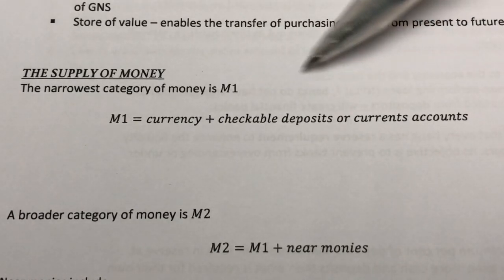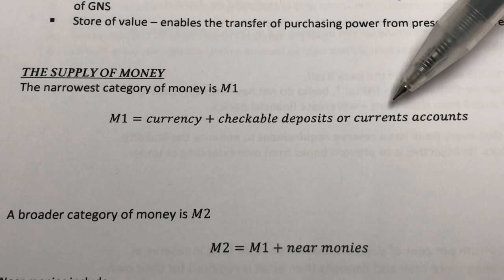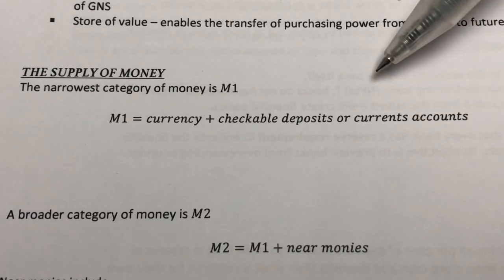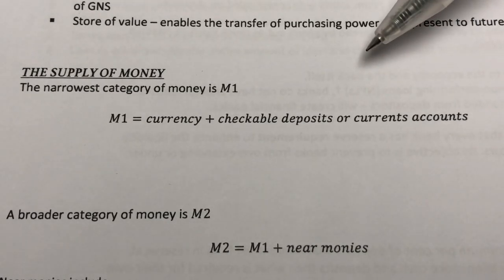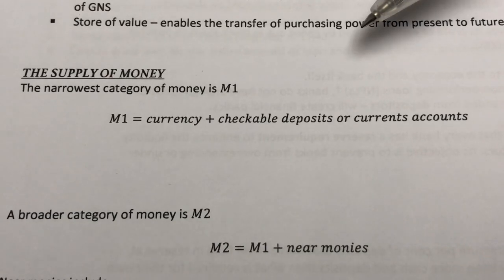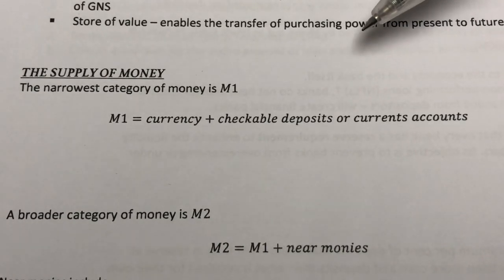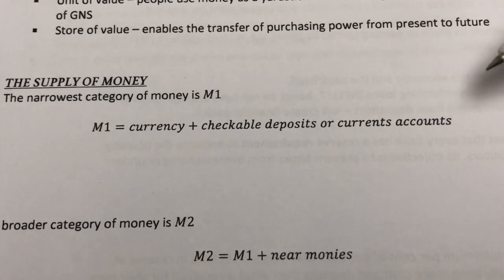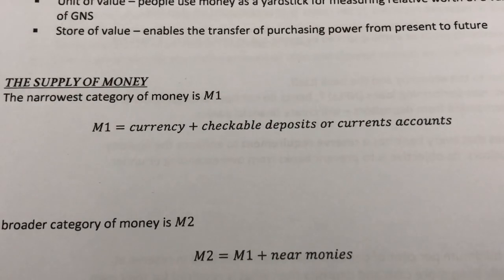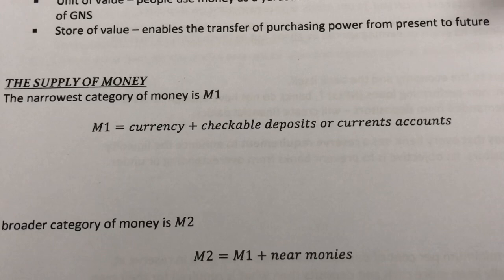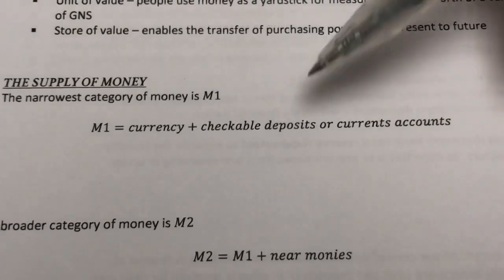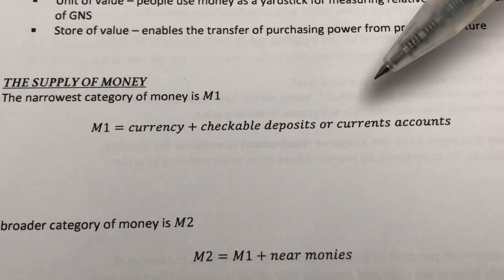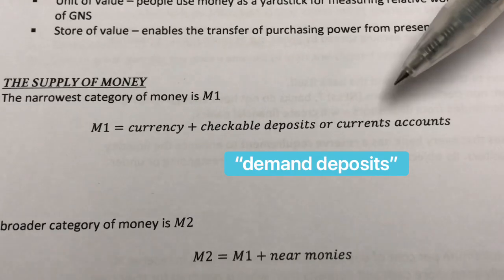Besides currency, we also have checks, also known as current accounts. These checks are also used in paying bills or buying large amounts of items as they're almost as convenient as currency. Checks or current accounts are basically balances in bank accounts at commercial banks as well as Islamic banks that depositors can access on demand by writing checks. Therefore, sometimes checkable deposits or current accounts are also known as demand deposits.